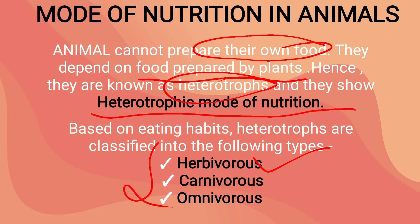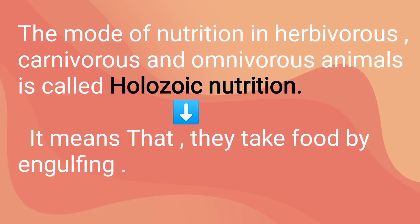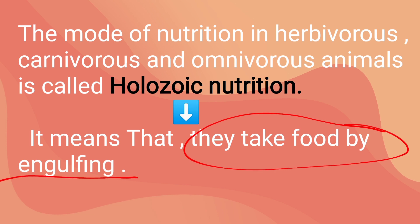Herbivores — those who depend on only plants. Carnivores — those who depend on flesh. And omnivores — those who depend on both plants and animals. The mode of nutrition in herbivores, carnivores and omnivorous animals is called holozoic nutrition. Holozoic means that they take food by engulfing.